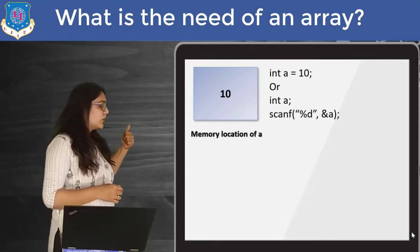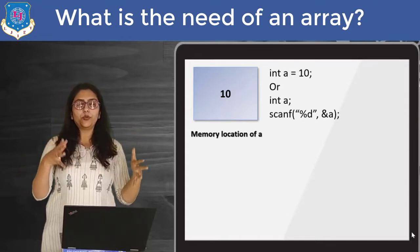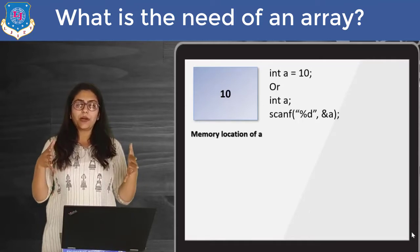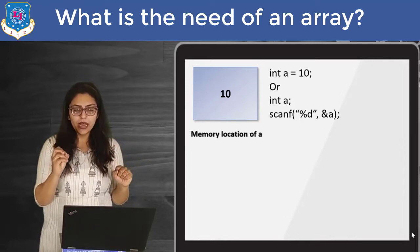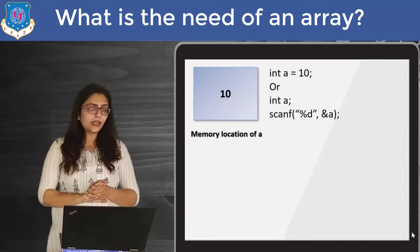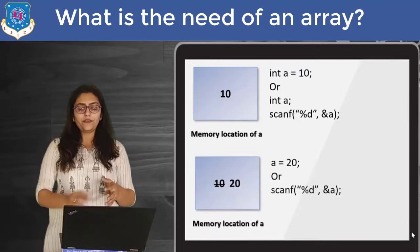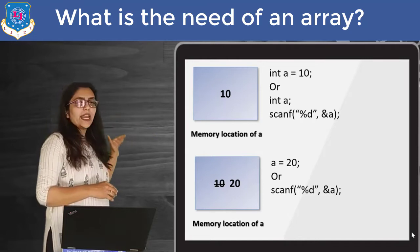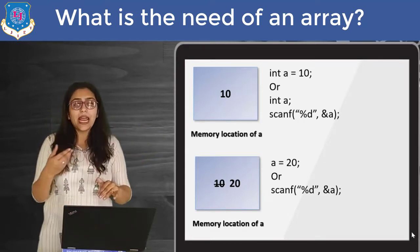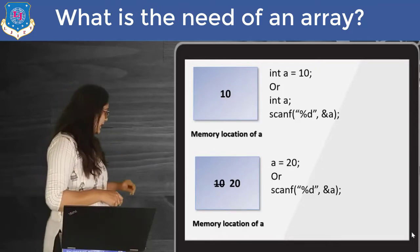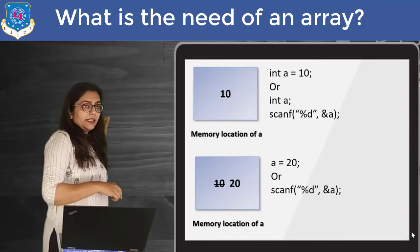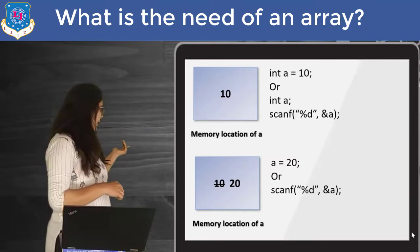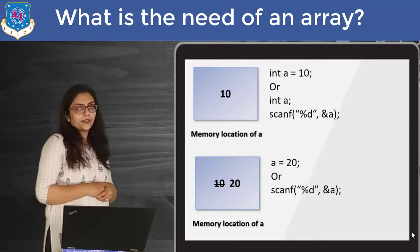Basically, whatever code you are using, based on that, a value will be put in my bucket A which is labelled as A inside my memory. Inside memory, at a particular location, some portion will be labelled as A and inside that, 10 will be put. Now, what if after the statement a equal to 10, I am again writing a equal to 20? What will be happening inside my memory? Basically, whatever value is there in A will be replaced with the new value. So now instead of 10, my memory location of A contains value 20 because I have updated its value.